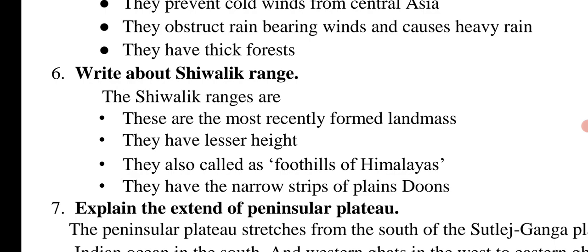What about the Shivalik Range? The Shivalik Ranges are the most recently formed landmass. They have lesser height. They are also called the foothills of the Himalayas. They have narrow strips of plains called Doons.